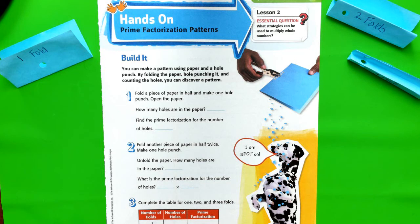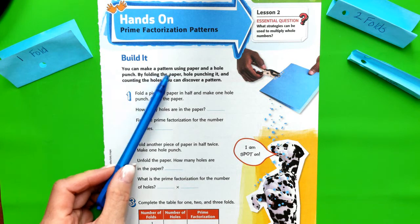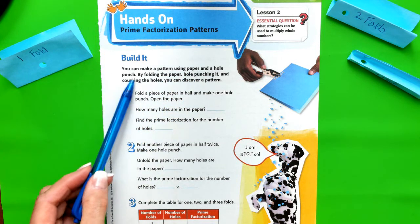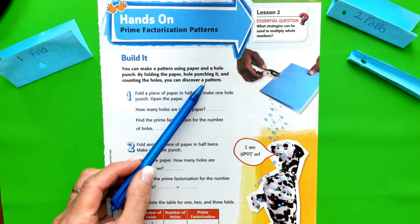Chapter 2, Lesson 2. The Hands-On Activity: Prime Factorization Patterns. It says you can make a pattern using paper and a hole punch. By folding the paper, hole punching it, and counting the holes, you can discover a pattern.